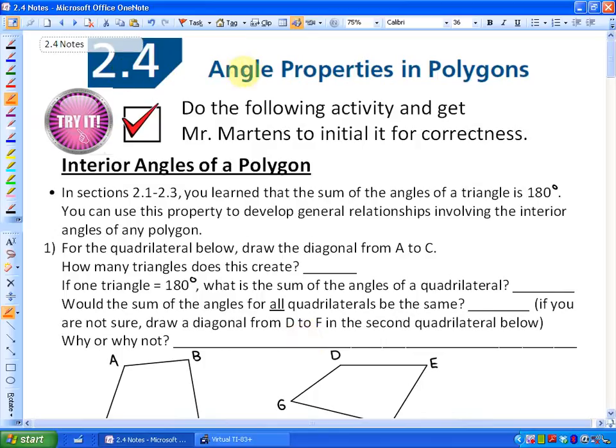In this lesson, we're going to look at the angle properties in polygons. Polygons are shapes that have any number of sides. So a quadrilateral is a four-sided polygon, a pentagon is a five-sided polygon, etc.